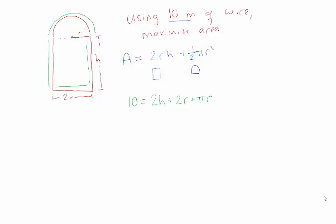Solving for h: 2h equals 10 minus r times (2 + π), so h equals 5 minus r times (1 + π/2). Now I'm going to substitute this back into my area function. Area equals 2r times h — which we now have in terms of r — plus (1/2)πr². This is the function we want to maximize.